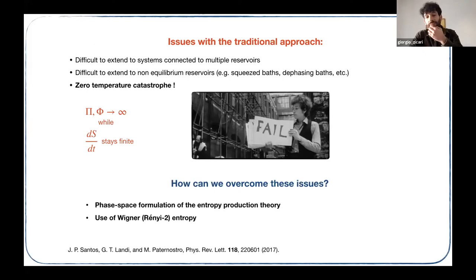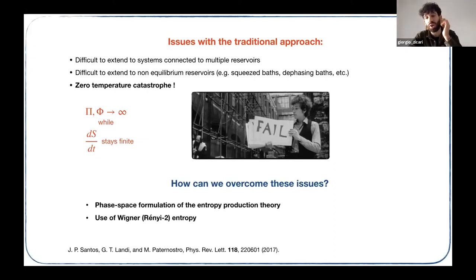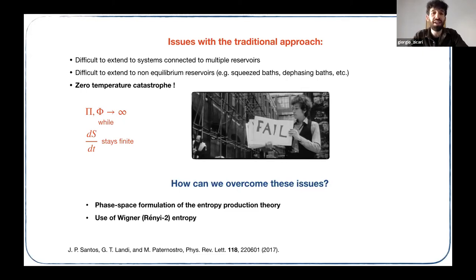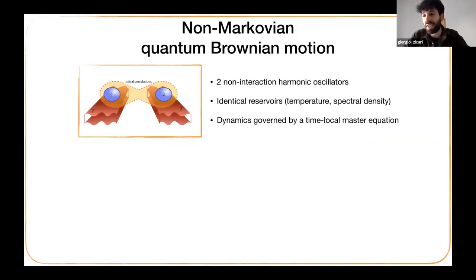One possible solution was provided by Santos, Landi, and Paternostro, who used well-known methods from quantum optics to provide a consistent theory of the entropy production rate. In this approach, instead of the von Neumann entropy, we use Rényi or other two-entropies. This framework handles the zero-temperature limit more easily and accommodates non-equilibrium or multiple reservoirs. This is the approach we used to investigate our system.